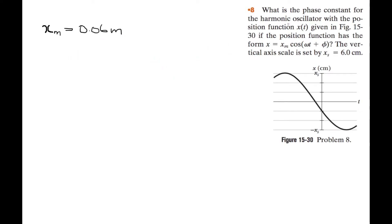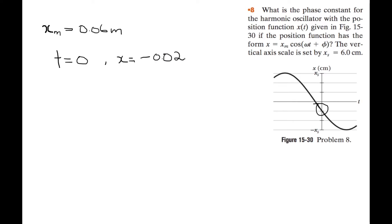That's all we're given in the statement above, but we can take a look at the graph. We can see that at time t equals 0, the position is right down here, which is negative 0.02 meters, because it's a third of the way to negative amplitude. So when time t equals 0, we have x equal to negative 0.02 meters.